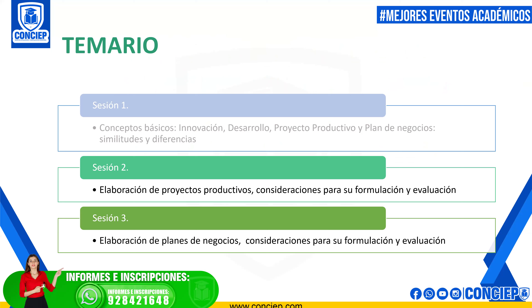Specifically, the projects of public investment in the product segment. These projects have a main characteristic: to be centered in what is understood as a product chain. That will mean a series of conditions and characteristics we have to take into account when elaborating the project. When we talk about public investment product projects, there is already a scheme — a form that Midagri has established that must be used. That is the FTE, the standard technical form for product projects, which we are going to see today.